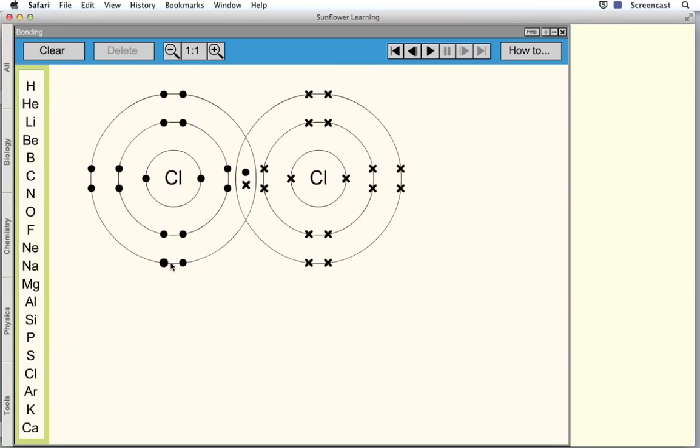Those two electrons are shared between the two atoms and orbit both atoms. And that's the covalent bond between these two atoms, Cl2, chlorine gas. Okay. So sharing of electrons.